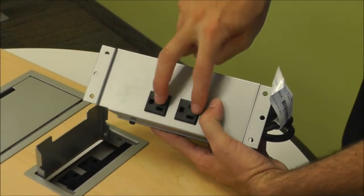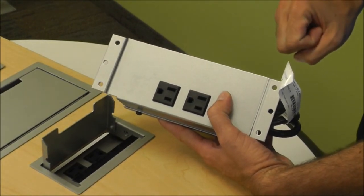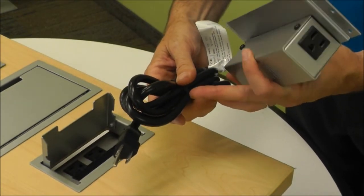This unit comes with either two receptacles or a unit that has two receptacles and two data jacks. Villa comes with a six-foot power cord or a nine-foot power cord.